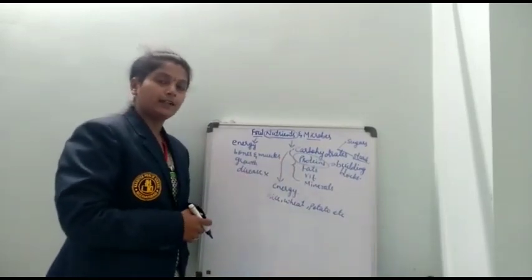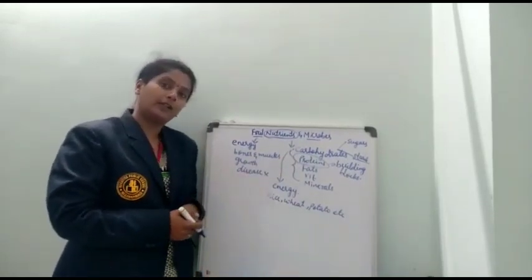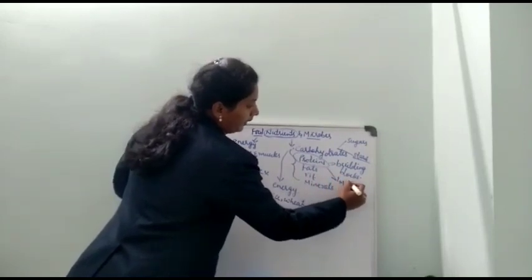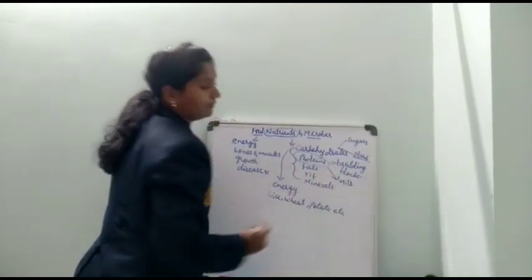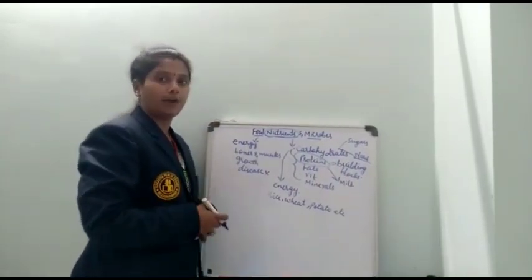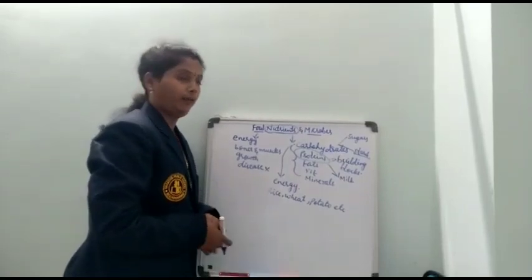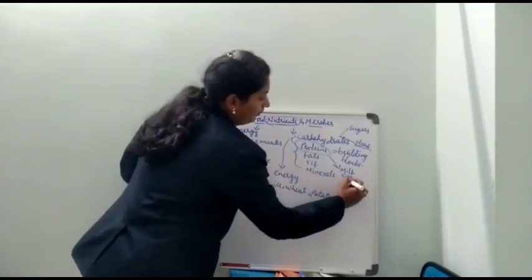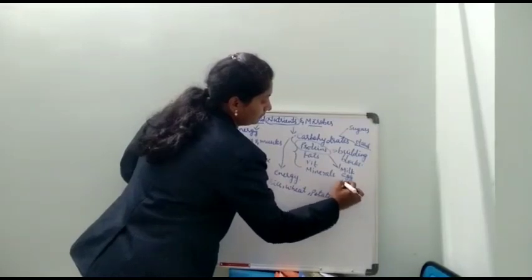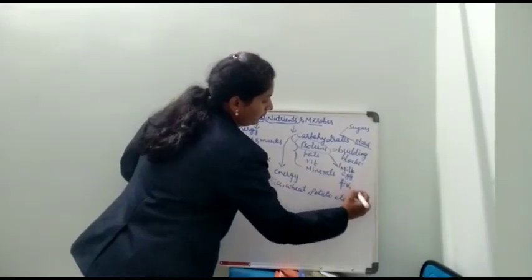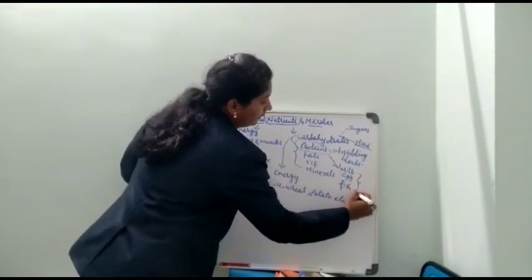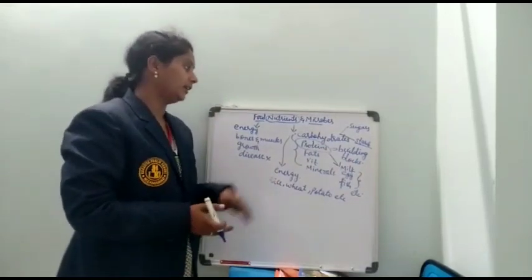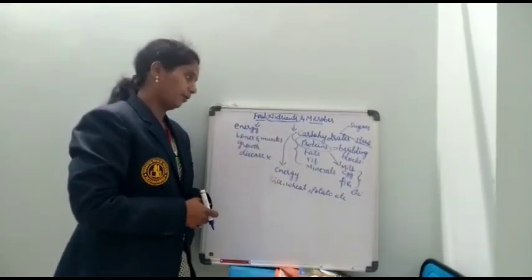Which food items contain protein? Especially milk — your mother insists you take milk twice a day because it is very good for health. Milk, egg, fish, etc. — in these food substances you can see a good number of proteins.